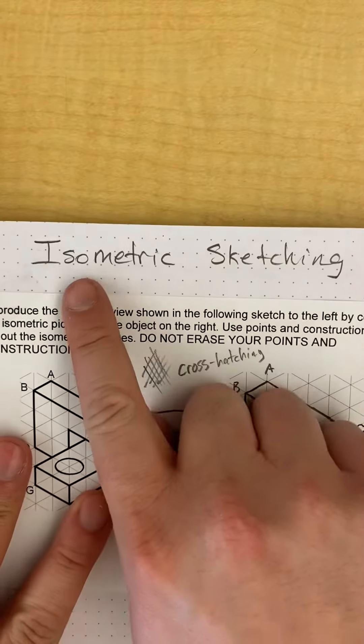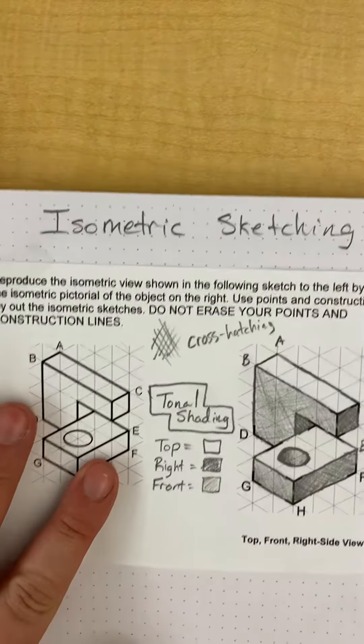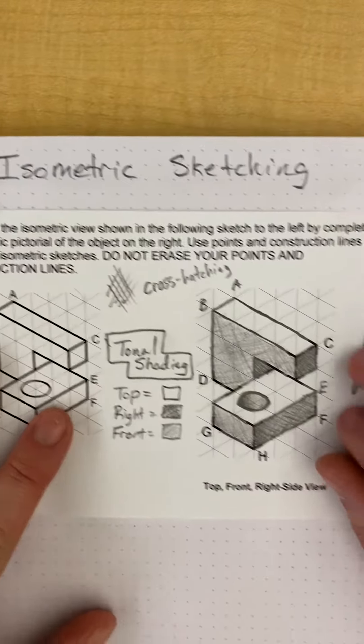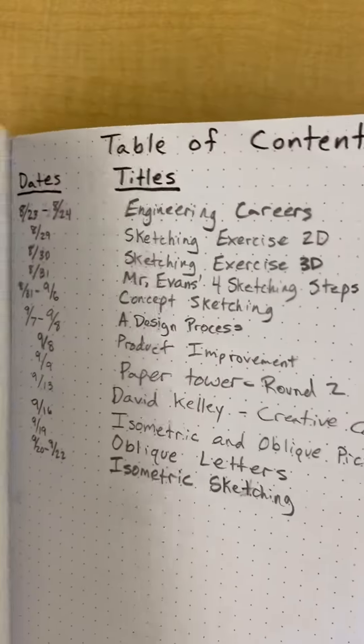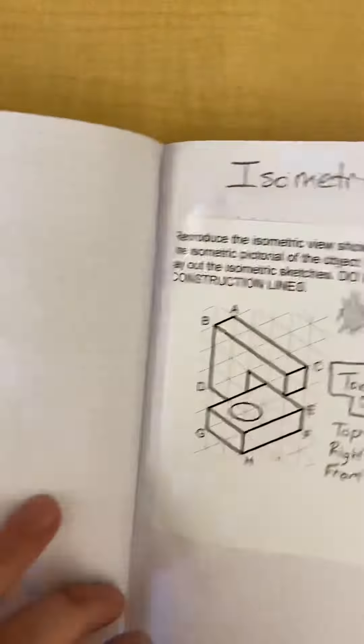For this assignment, make sure you're putting your title at the top, the example we practiced, your signature, and your date. Don't forget to include isometric sketching in your table of contents.